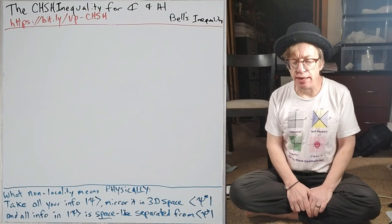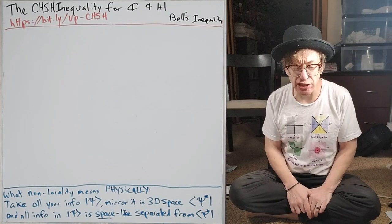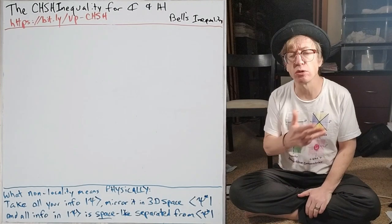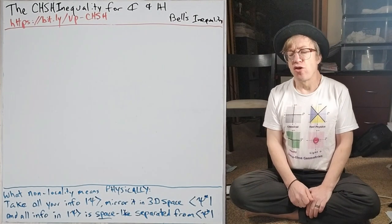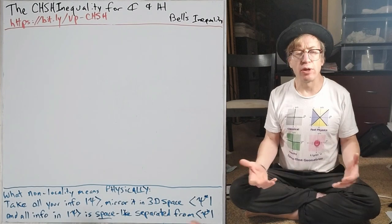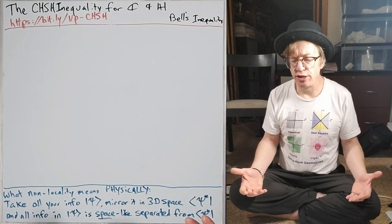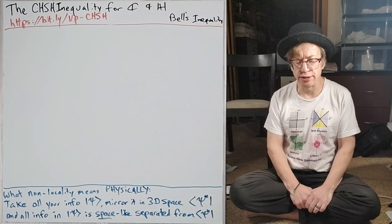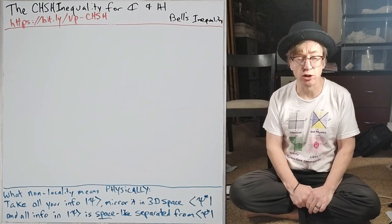The CHSH is Clauser, Horne, Shimony, and Holt. So they were generalizing the inequality so that it could deal with more experimental situations, tests of what's going on there.